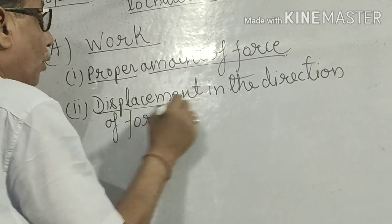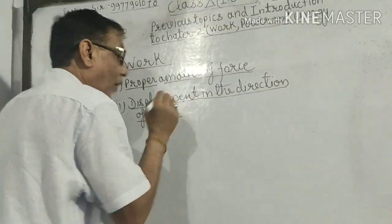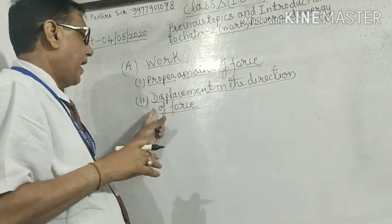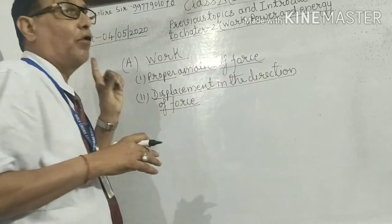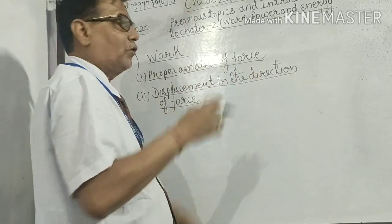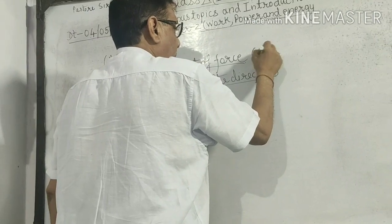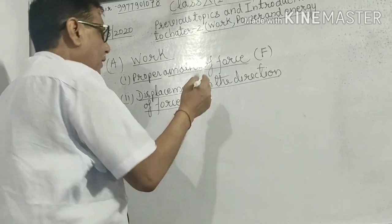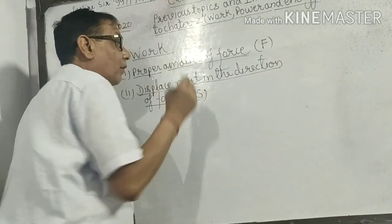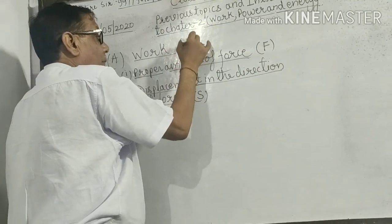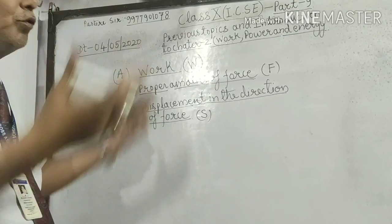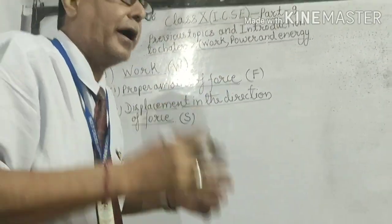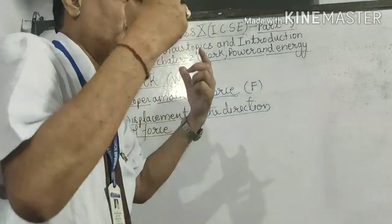These two things are very important for doing work in physics: proper amount of force applied on the body, and displacement in the direction of force. So proper amount of force which we apply on the body — let it be denoted by F. And the displacement in the direction of force — let it be denoted by S. And the work is denoted by W. Whenever we discover a physical quantity in physics, we want to make its formula, then after the formula its units, and we will read its properties.